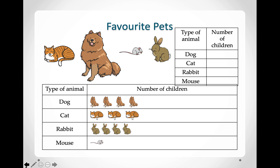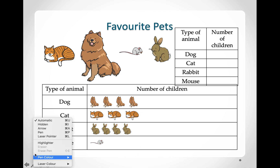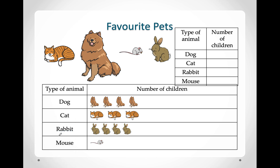Here you can help me out — count with me. This pictogram shows the number of children and their favourite pets. How many kids like dogs? 1, 2, 3, 4 — so we will write 4 in our table.